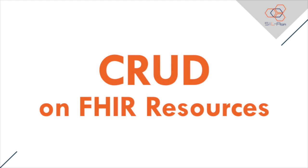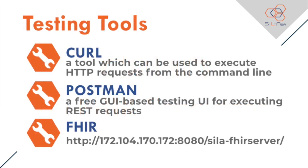Before proceeding to the CRUD operations on FHIR resources, you may want to use any one of these testing tools. CURL is a tool which can be used to execute HTTP requests from the command line. Postman is a free GUI-based testing user interface for executing REST requests. FHIR Client is an interface to a FHIR server. SIL Asia has set up a HAPI FHIR server instance accessible at 172.104.170.172:8080/zilla-fhir-server/fhir. The testing tools are ready — let's proceed to the CRUD operations.